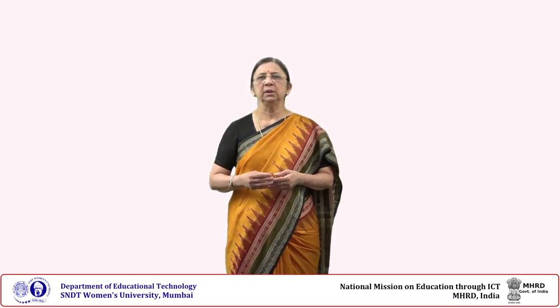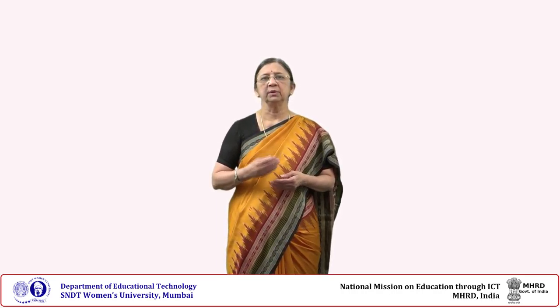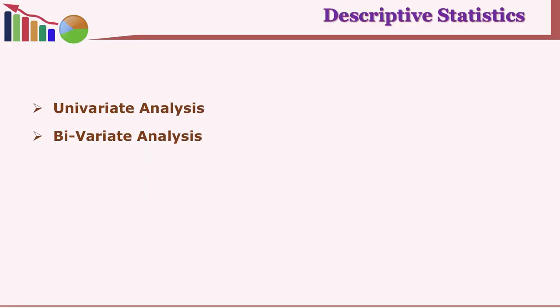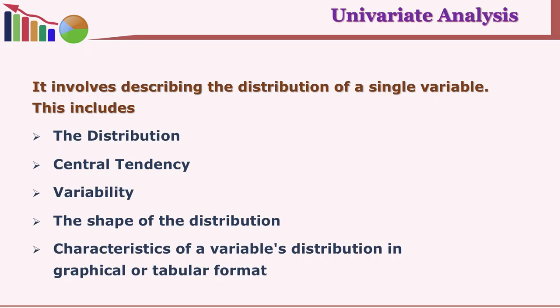As a researcher, you are interested in finding out the relationship, the association, and may be a causal relationship. For this we started with descriptive statistics. In descriptive statistics, we saw that there are two types: univariate and bivariate. In univariate analysis, we have measures like central tendency, variability, skewness and kurtosis, and graphical representations. Today, we will see about bivariate analysis of our distribution.